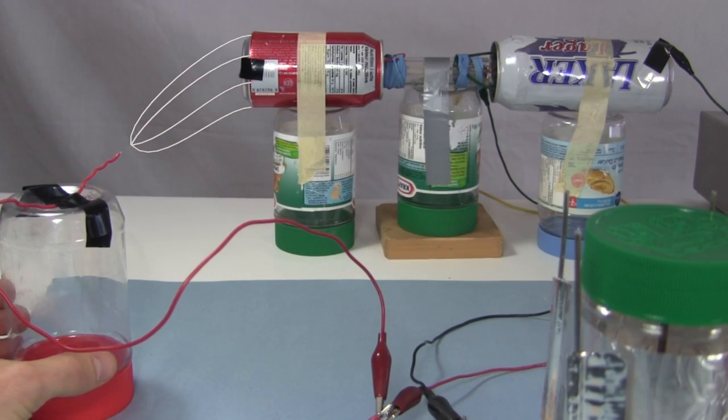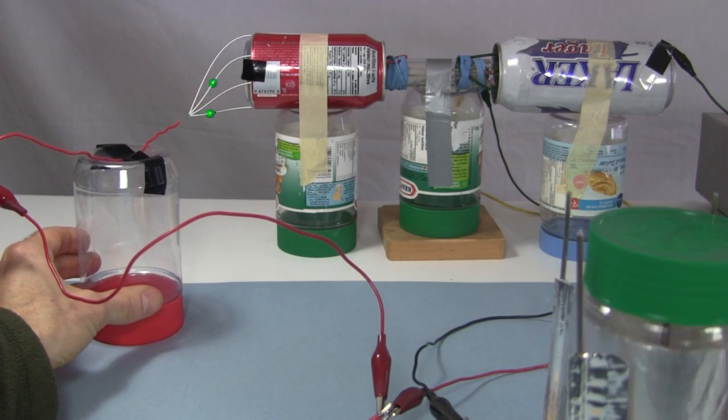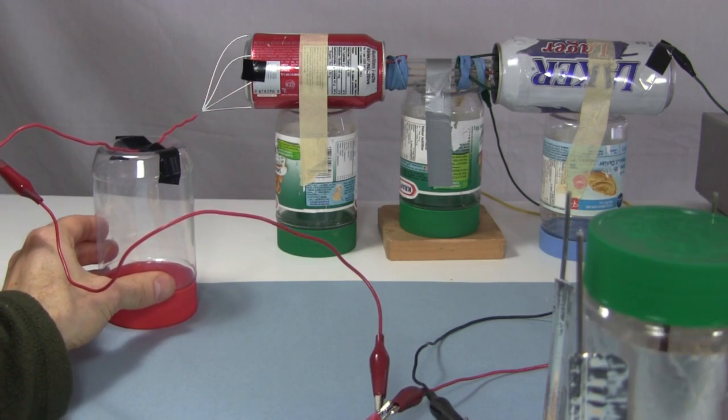There's an electric field between the sharp wire and the can, and at a small enough distance that field becomes strong enough to ionize the air between them and begin conducting electricity.